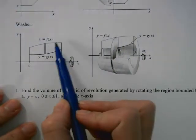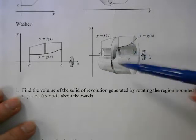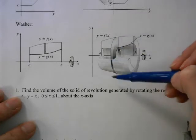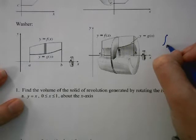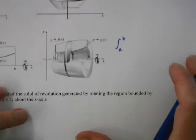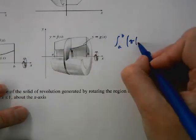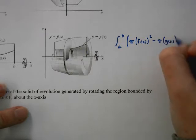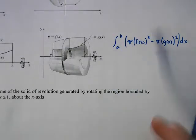Next, if we have two different functions, the cross-sectional area is floating in space. If we revolve it around the x-axis, we end up with a cylinder that has a hole in it. The cross section looks like a washer — it has an outside and an inside. So we do the integral from a to b of the outside circle minus the inside circle: pi times f(x) squared minus pi times g(x) squared dx. You can factor the pi out.